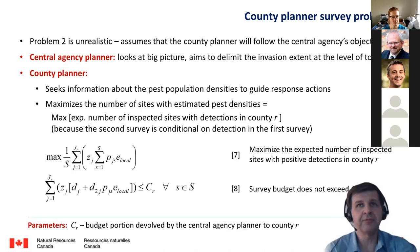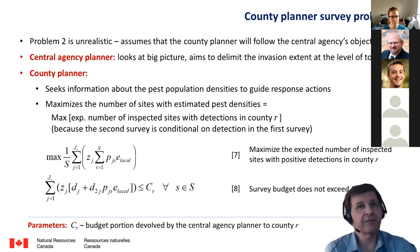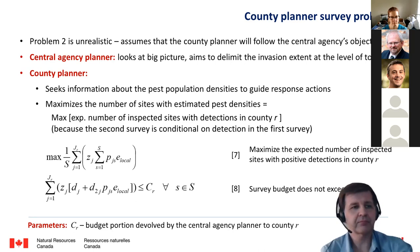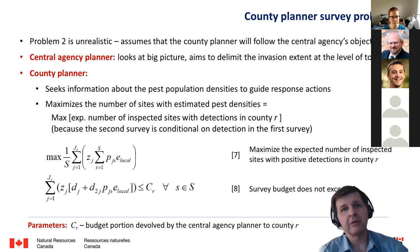The county planner seeks information about pest population density, which translates into a different objective. The county planner maximizes the number of sites with estimated pest density because the second survey is conditional on detection of the pest — they need the second survey to estimate density. Formally, they maximize the expected number of sites with completed second surveys, which is equivalent to maximizing the expected number of inspected sites with positive detections. This is also unrealistic as a model because it assumes county planners would strictly follow the central agency objective, which is not true.